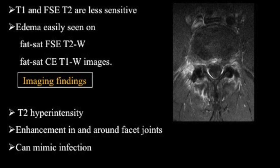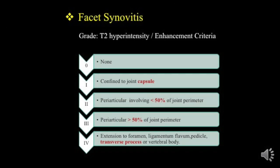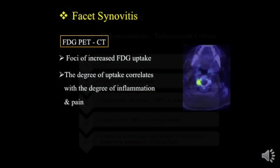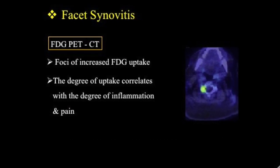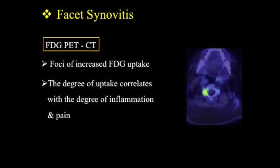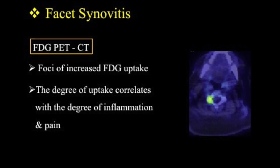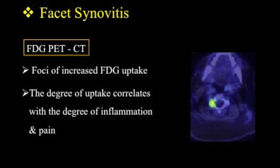If we grade facet synovitis: when it is confined to the capsule it is grade 1; periarticular extension less than 50% is grade 2; more than 50% is grade 3; and extension into the foramen, ligamentum flavum, transverse process, or vertebral body becomes grade 4. PET-CT may also be useful but is not usually done — it is mainly used to differentiate active inflammation versus fibrosis.